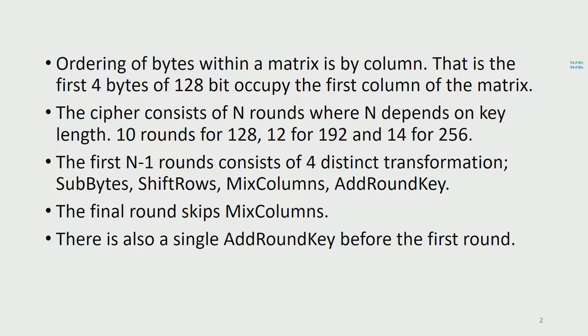The first n-1 rounds consist of 4 distinct transformations: SubBytes, ShiftRows, MixColumns, and AddRoundKey. The final round skips the MixColumns step. There is also a single AddRoundKey operation before the first round.